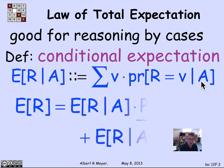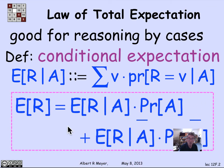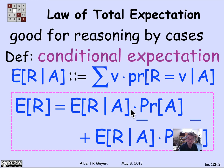With that definition, we can state the basic form of the law of total expectation, which says if you want to calculate the expectation of r, you can split it into cases according to whether or not a occurs. It's simply the conditional expectation of r given a times the probability of a, plus the conditional expectation of r given not a times the probability of not a.